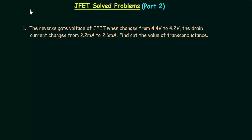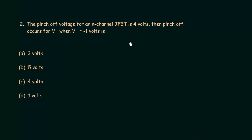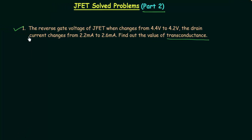We have already completed part 1 of JFET solved problems. In part 2 we will solve two problems. Problem number 1 is based on transconductance and the second problem is taken from the GATE 1987 paper. Let's start with problem number 1 in which we have to calculate the transconductance.